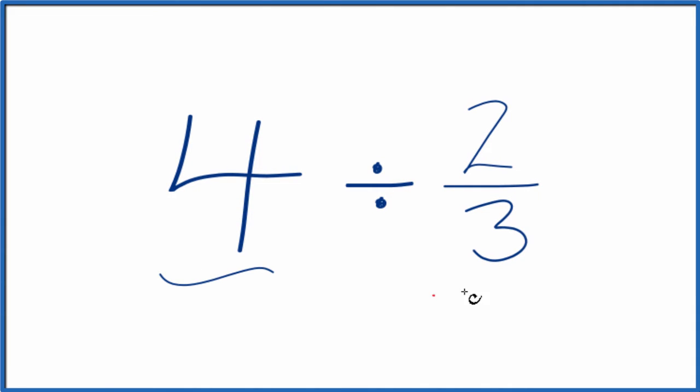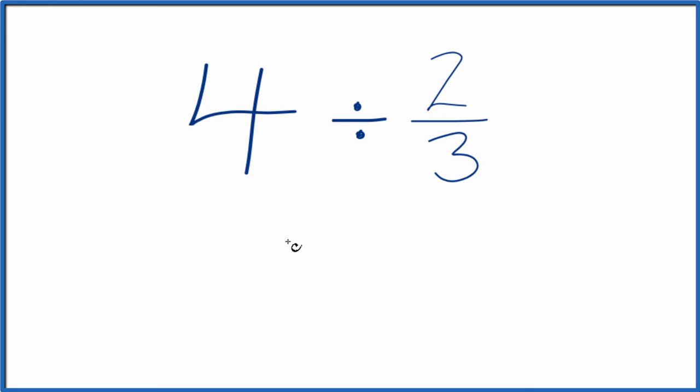Here's how you divide 4 by 2 thirds. Let's start by calling it 4 over 1. It's still 4, we're just dividing by 1. This gives us the fraction though, and that's going to be helpful.